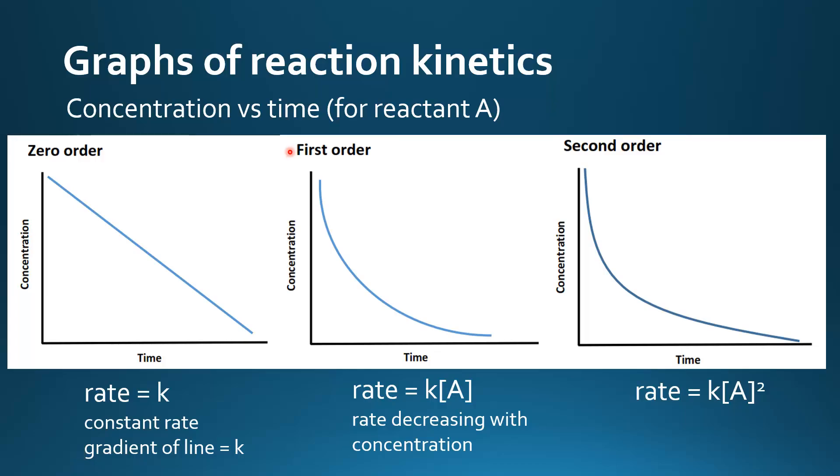Next is a first-order reaction. The rate equals K times the concentration of A. And we have this curved line. The rate is decreasing with concentration.